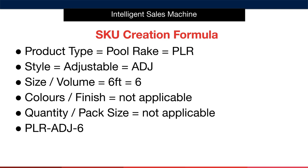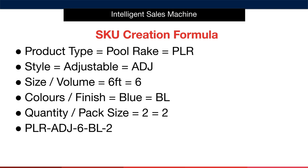Let's look at another example. Here, we've marked that the item is blue in colour and is sold as a two-pack. In this case, we'd adjust the SKU to become PLR-ADJ-6-BL-2. We'd note the colour if we have intentions to do multiple colours in this range. It's important to be careful when creating colour codes, as some colours begin with the same letter — for example, blue, black, and brown. In that case, use two letters: BL, BK, or BR. This system clearly denotes the colours and makes it consistent and easy to understand.